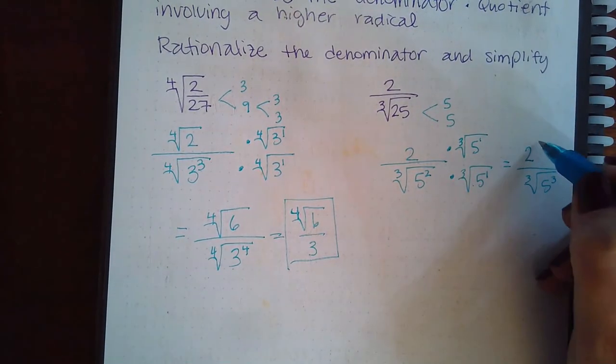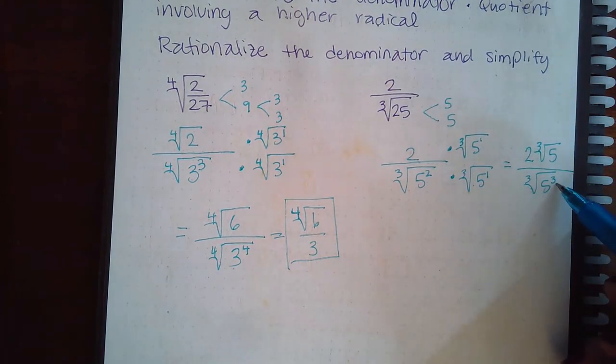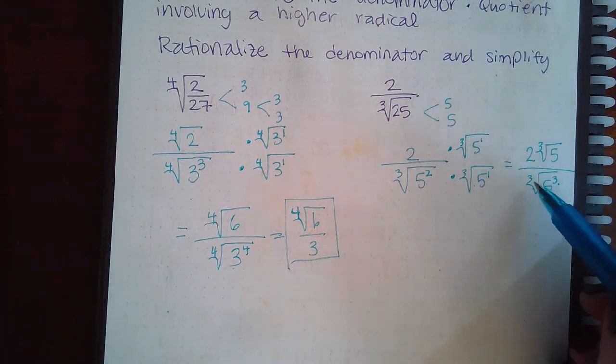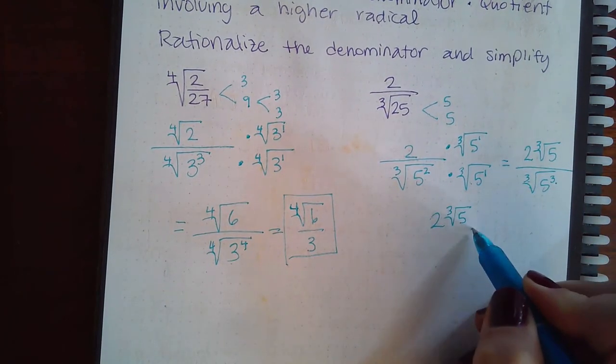So I end up with 2 cube root of 5 in the top and cube root of 5 cubed at the bottom. And then these two undo each other and I end up with 2 cube root of 5 over a regular 5.